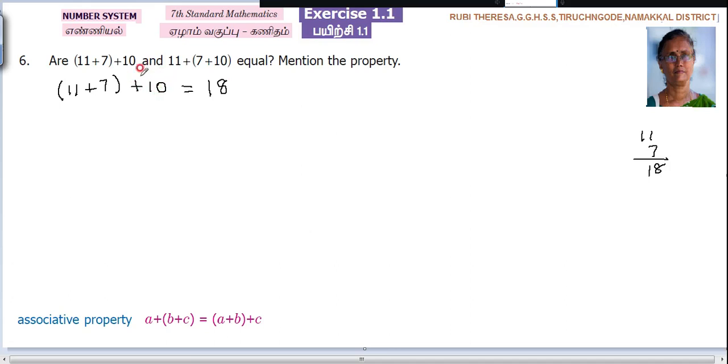Next what is given here? What is remaining here? Plus 10. So you have to add these two. 18 plus 10 is 28. So you have finished this part.